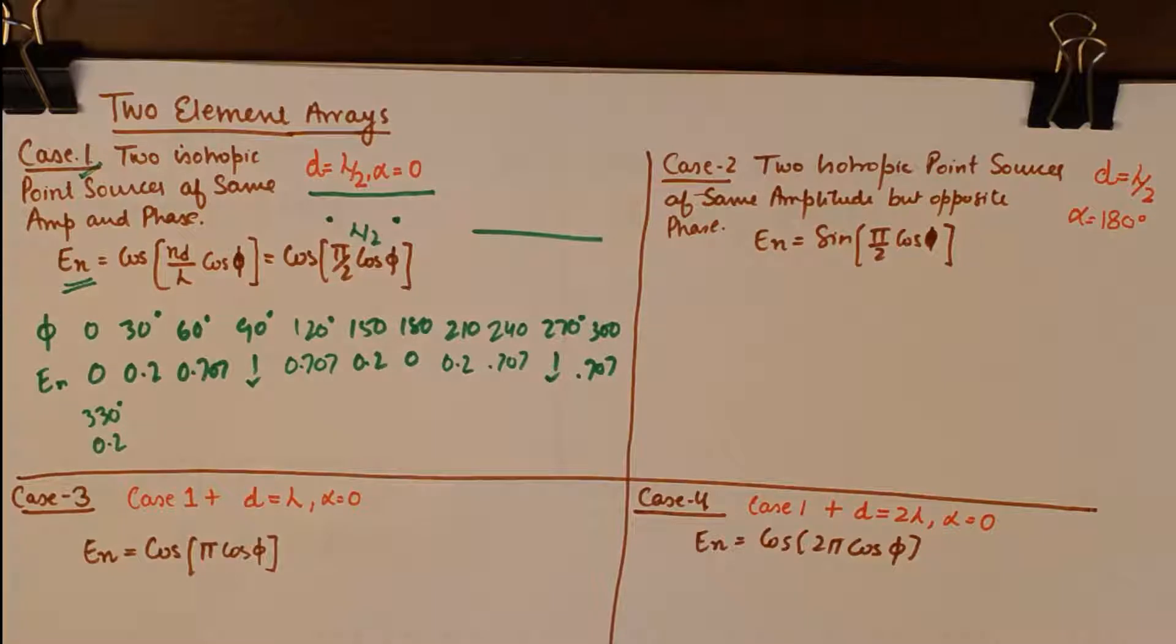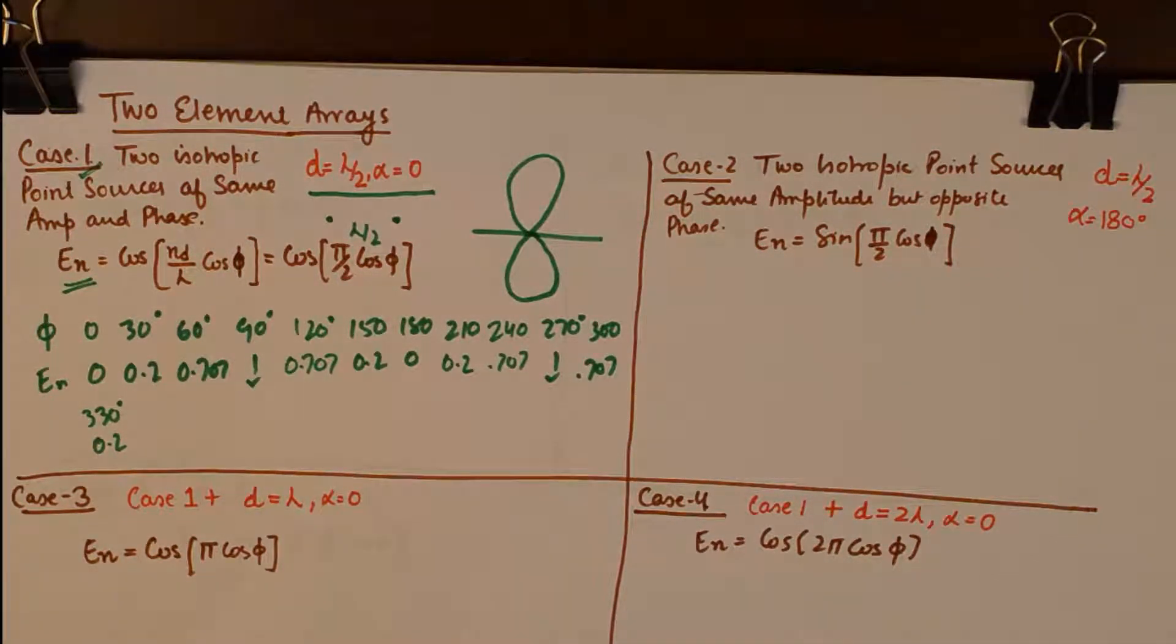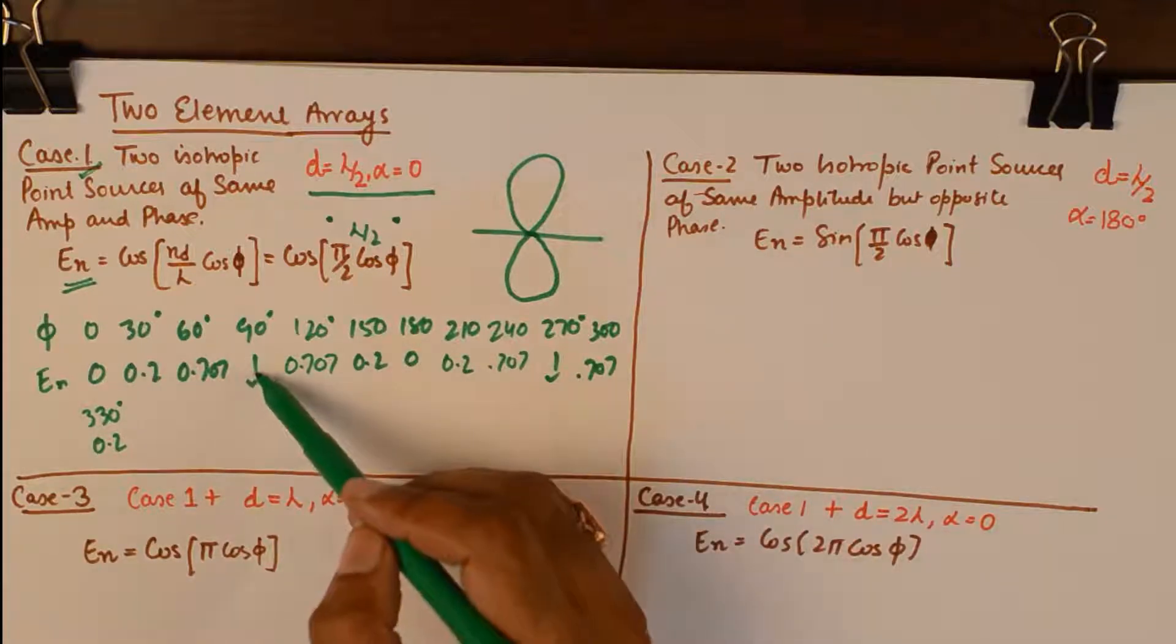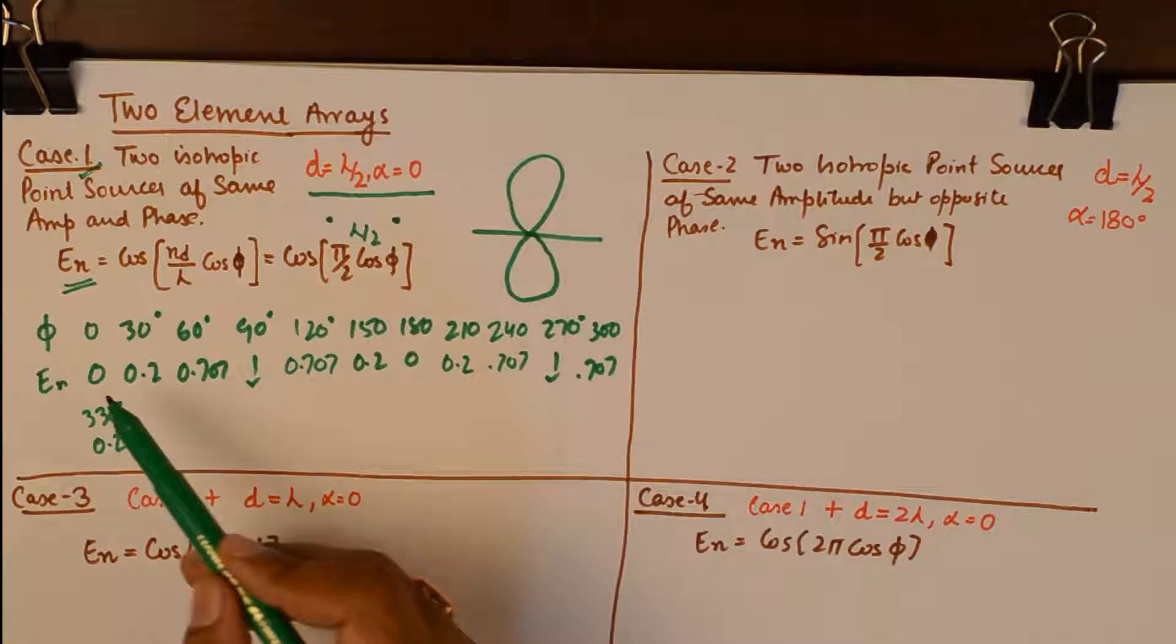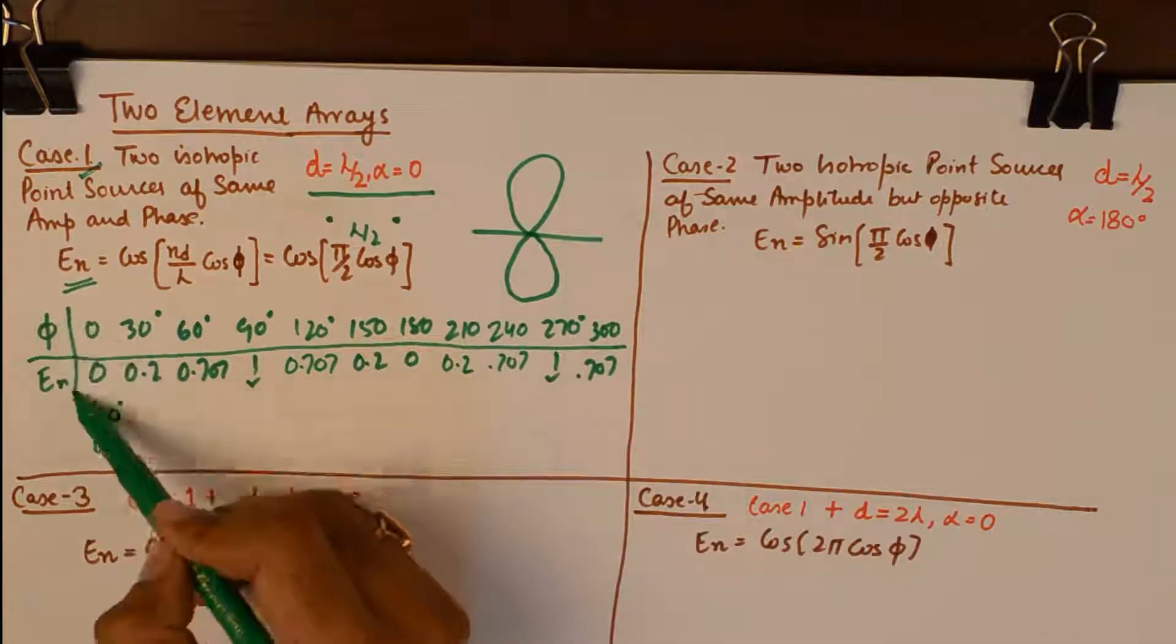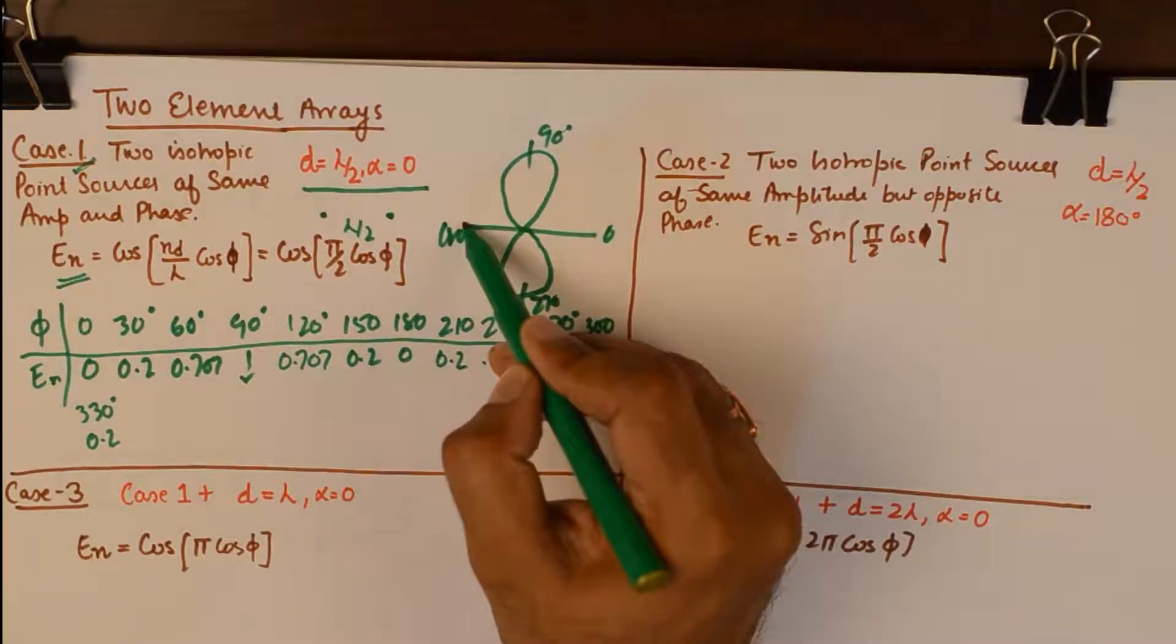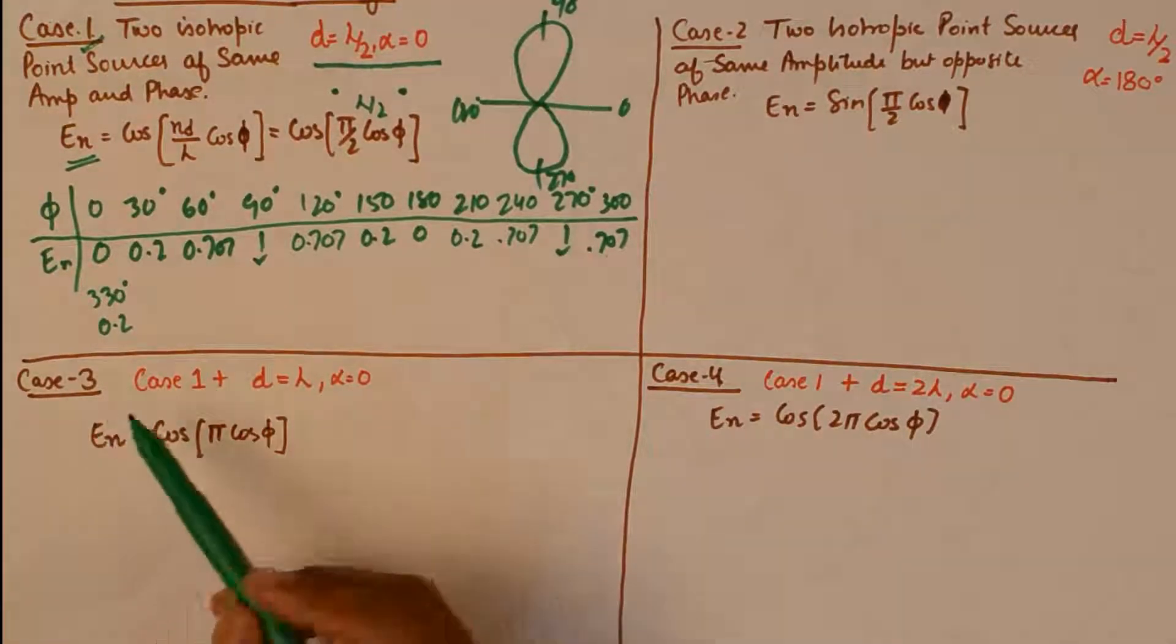So that is how you need to see the electric field intensity received at different points in space which are only dependent upon an angle which is phi. You can go on till 360 degrees. I am doing it for 300 now which is 0.707, and for 330 it is 0.2. You can simply put the value of phi here and calculate the value of En and create this table. And you will find the maxima occurring at 90 and 270, which gives me the very popular radiation pattern of broadside array, which is an 8 shape radiation pattern.